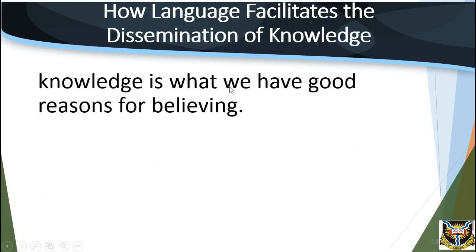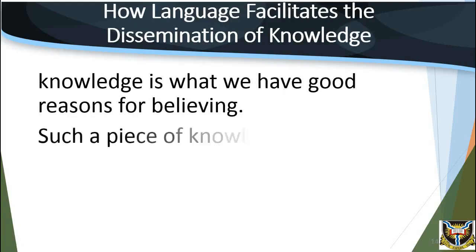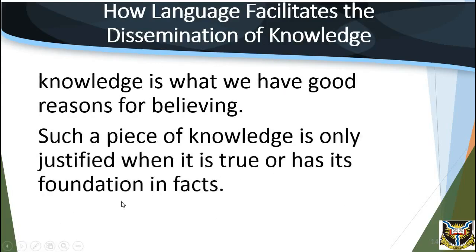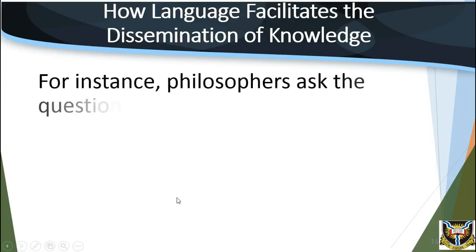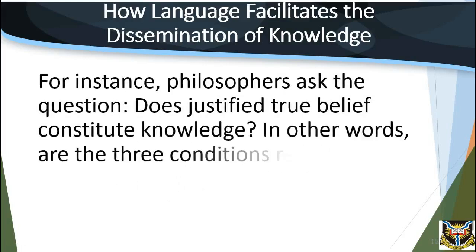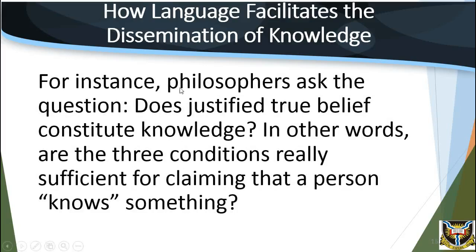The overall implication of these three conditions is that knowledge becomes justified through belief — knowledge is what we have good reasons for believing. Such a piece of knowledge is only justified when it is true or has its foundation in facts. This conception of knowledge, often called the traditional definition of knowledge, has become a significant problem in philosophy. Philosophers ask: does justified true belief constitute knowledge? Are the three conditions really sufficient for claiming that a person knows something? For instance, they have argued that it is possible to know something without actually believing it — imagine being asked to state the date of the last eclipse of the sun at an interview.